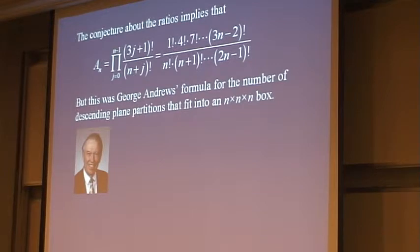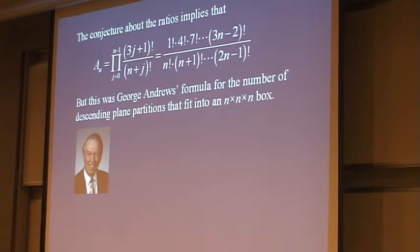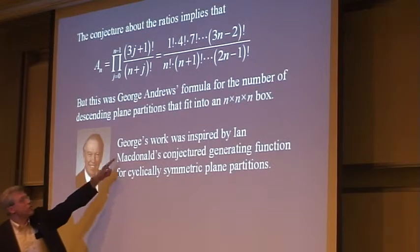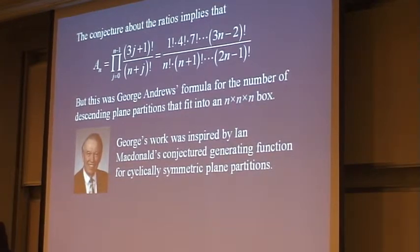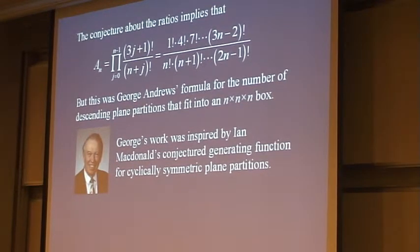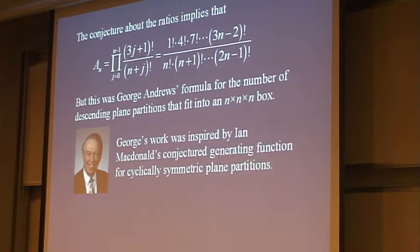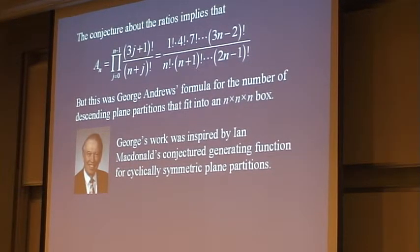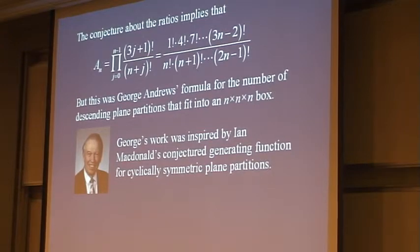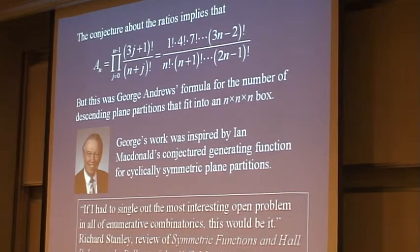Although we saw one related talk on that — finding a bijection between the Gog and Magog triangles — George's work on descending plane partitions had been inspired by Ian MacDonald's conjecture on the generating function for cyclically symmetric plane partitions. And so that led Mills, Robbins, and Rumsey to consider cyclically symmetric plane partitions and how they might be related to alternating sign matrices.